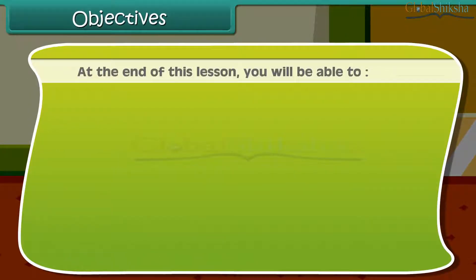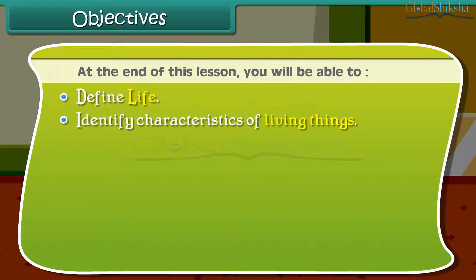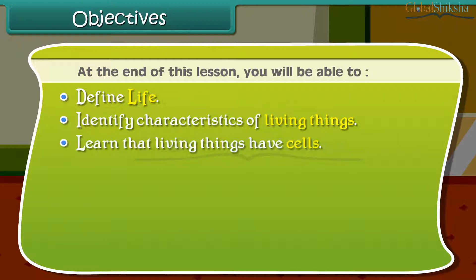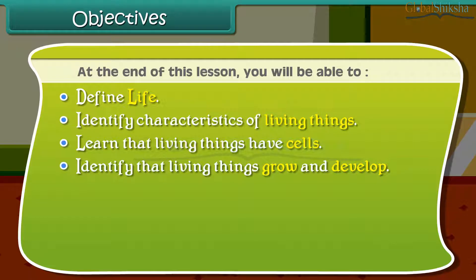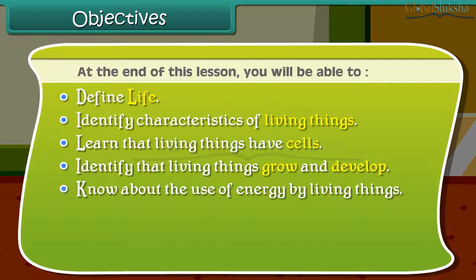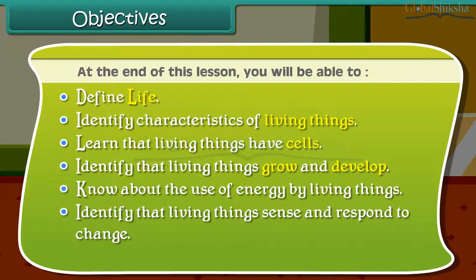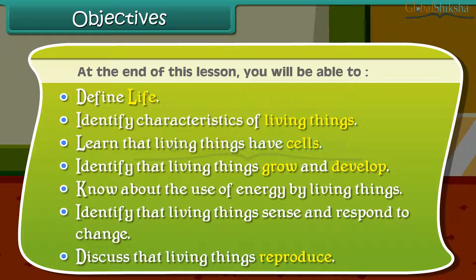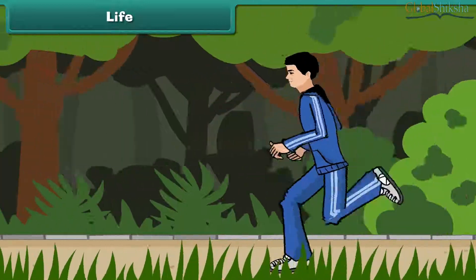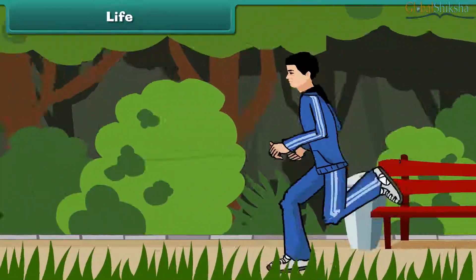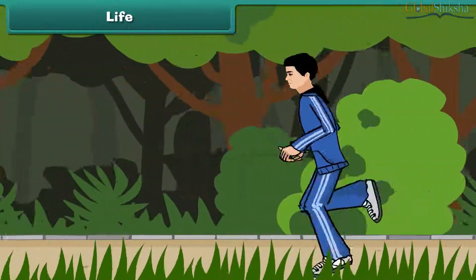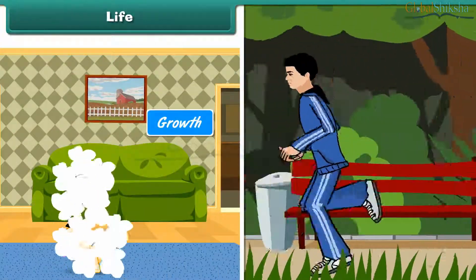At the end of this lesson, you will be able to: define life; identify characteristics of living things; learn that living things have cells; identify that living things grow and develop; know about the use of energy by living things; identify that living things sense and respond to change; and discuss that living things reproduce.